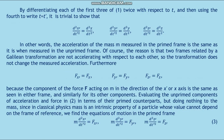Furthermore, f-sub-x-asterisk equals f-sub-x, f-sub-y-asterisk equals f-sub-y, f-sub-z-asterisk equals f-sub-z, because the component of force F acting on mass m in the direction of the x-asterisk or x-axis is the same as seen in the unprimed frame, and similarly for its other components. Evaluating the unprimed components of acceleration and force in formula number 2 in terms of their primed counterparts — but doing nothing to the mass, since in classical physics mass is an intrinsic property of the particle whose value cannot depend on the frame of reference — we find the equations of motion in the primed frame, formula number 3.